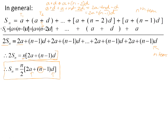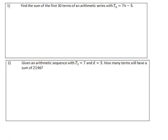Let's take a look at some examples. Please pause the video and try these on your own. Number 1. Find the sum of the first 30 terms of an arithmetic series with TN equals 7N minus 5. So remember that TN gives us the general formula that we can use to find any term of the sequence. So term 1 will be 7 times 1 minus 5, which is equal to 2.